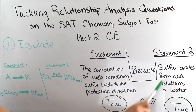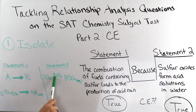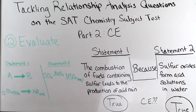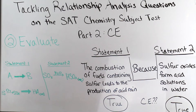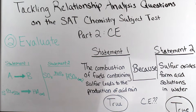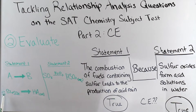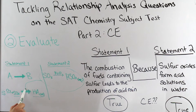In statement two, we see a very straightforward chemical reaction. We've written it here: sulfur oxides combined with water to form sulfur-containing acids. Now that we've isolated, we can evaluate. The second statement should be a direct explanation or a logical conclusion for the phenomenon in the first. We should be able to put this chemical reaction into this arrow and have the whole statement make sense. As we can see from statement one, combusting fuels containing sulfur does lead to SOX compounds.